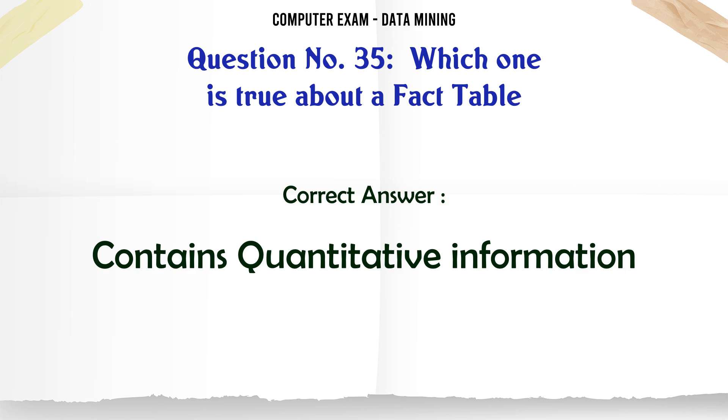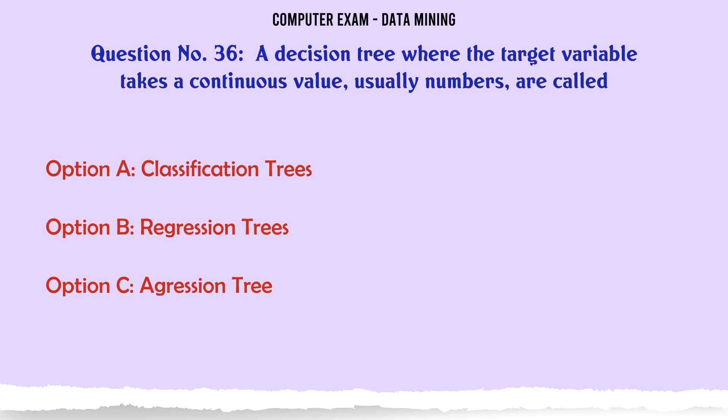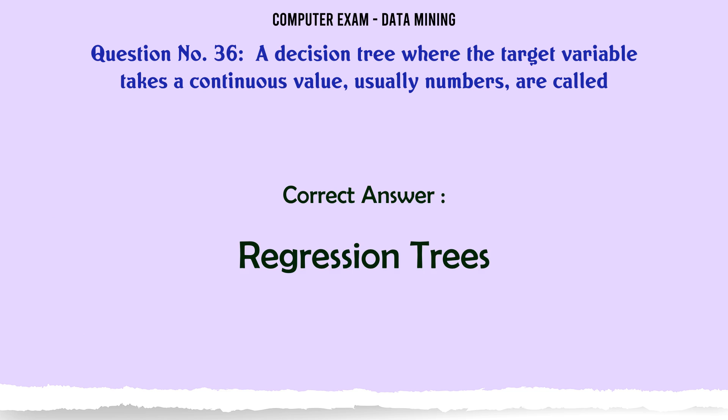A decision tree where the target variable takes a continuous value, usually numbers, is called: A. Classification trees. B. Regression trees. C. Aggression tree. D. Expanded tree. The correct answer is Regression trees.